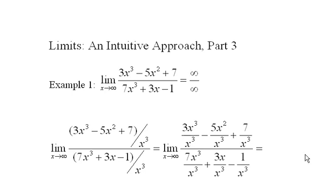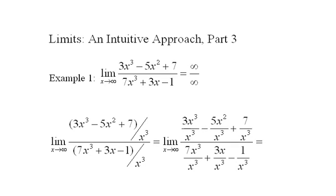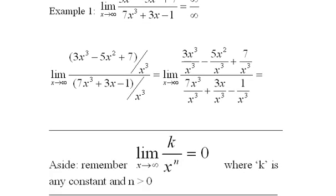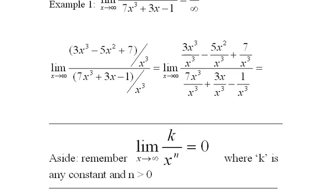And I want to remind everyone of this little limit here that we should know. This is an aside. Remember that the limit of a constant over x to the n, where n is greater than zero, as x goes to infinity equals zero. As this bottom grows without bound and the top's not growing or changing at all, then this thing is going to become a smaller and smaller number or head to zero.